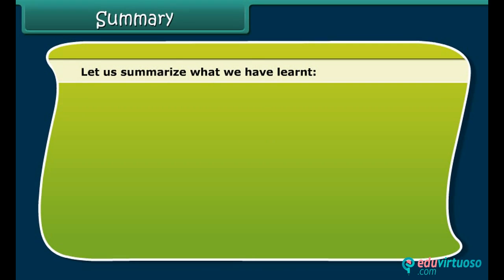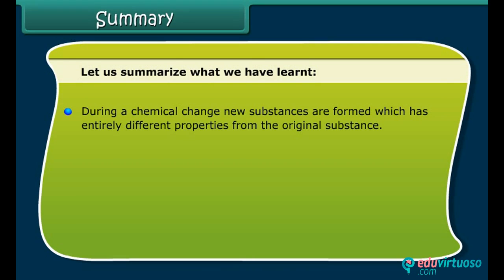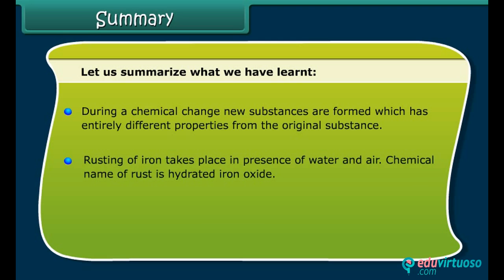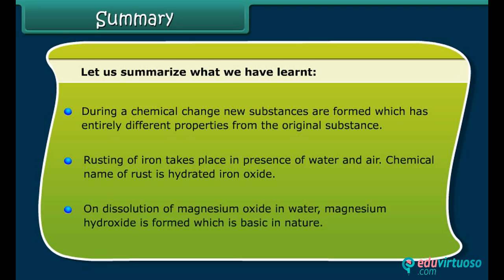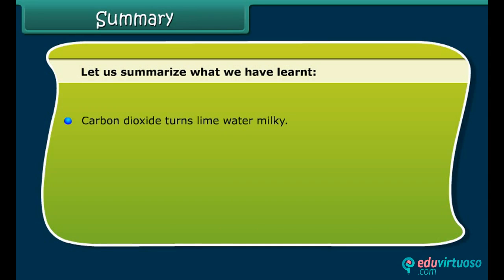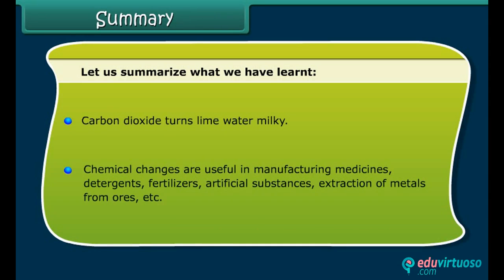Summary: During a chemical change, new substances are formed which have entirely different properties from the original substance. Rusting of iron takes place in the presence of water and air; the chemical name of rust is hydrated iron oxide. On dissolution of magnesium oxide in water, magnesium hydroxide is formed, which is basic in nature. Carbon dioxide turns lime water milky. Chemical changes are useful in manufacturing medicines, detergents, fertilizers, artificial substances, and extraction of metals from ores.